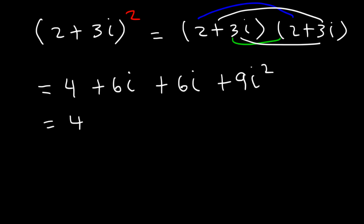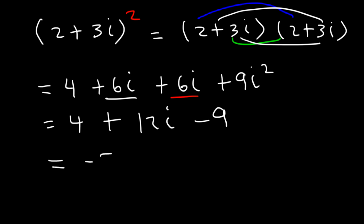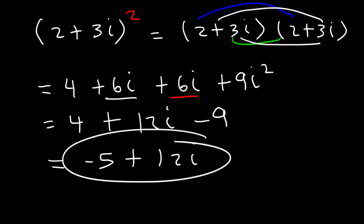Now let's combine the two middle terms: 6i plus 6i equals positive 12i. 9i squared is negative 9. And 4 minus 9 is negative 5. So the answer is negative 5 plus 12i.